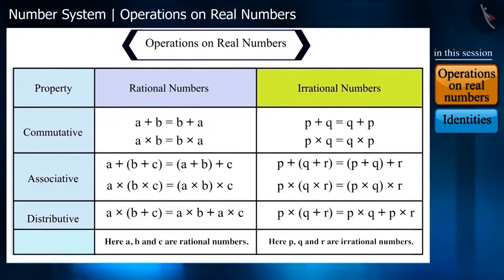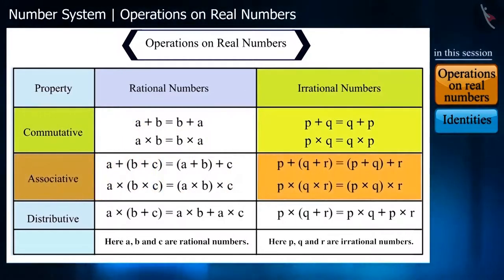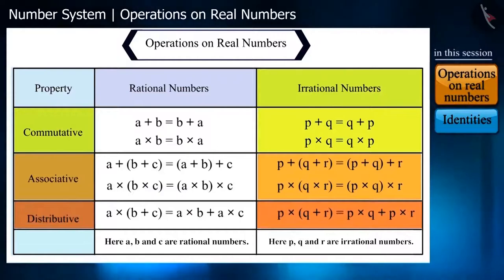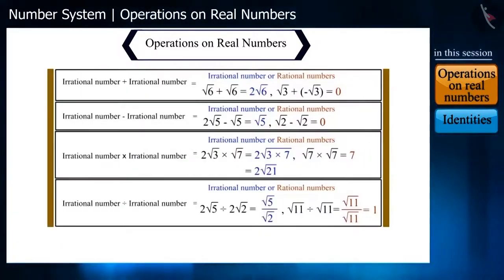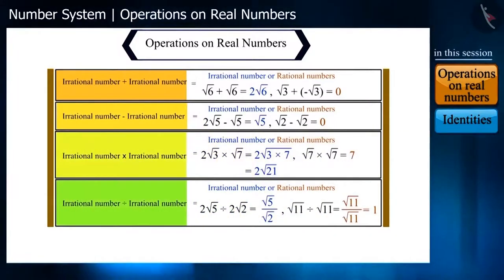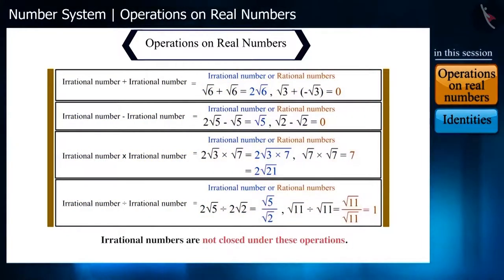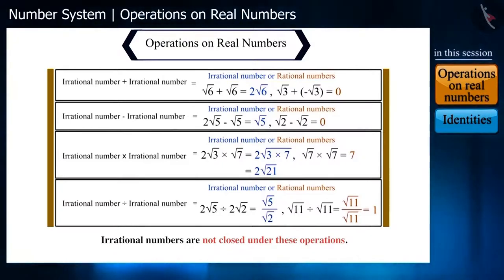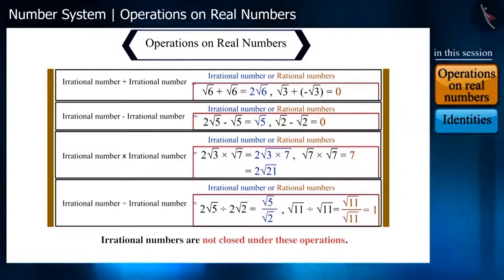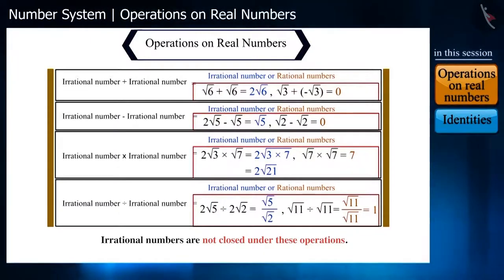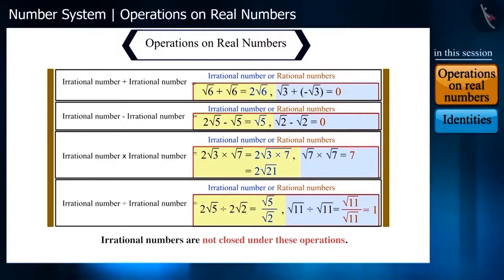Irrational numbers also follow the commutative, associative and distributive rules of addition and multiplication. But on adding, subtracting, multiplying and dividing irrational numbers, the number obtained is not always an irrational number. That means irrational numbers are not closed under these operations. You can easily understand this by looking at these examples — we are getting both rational and irrational numbers.